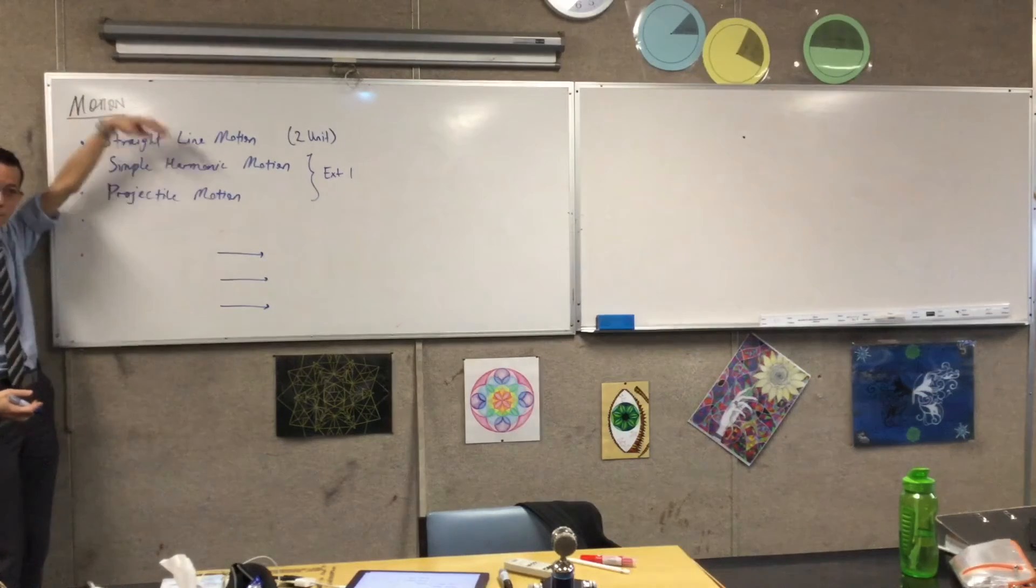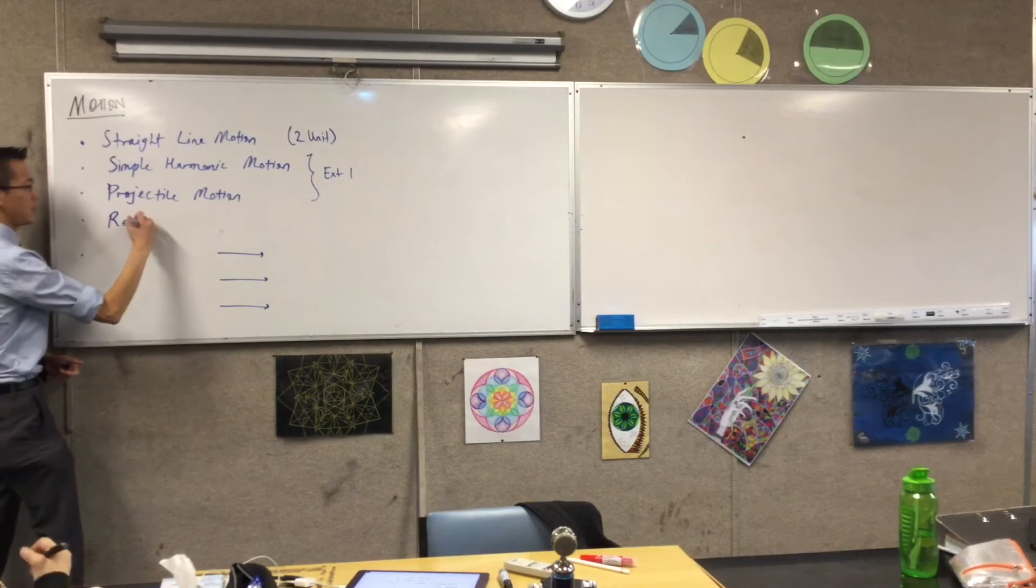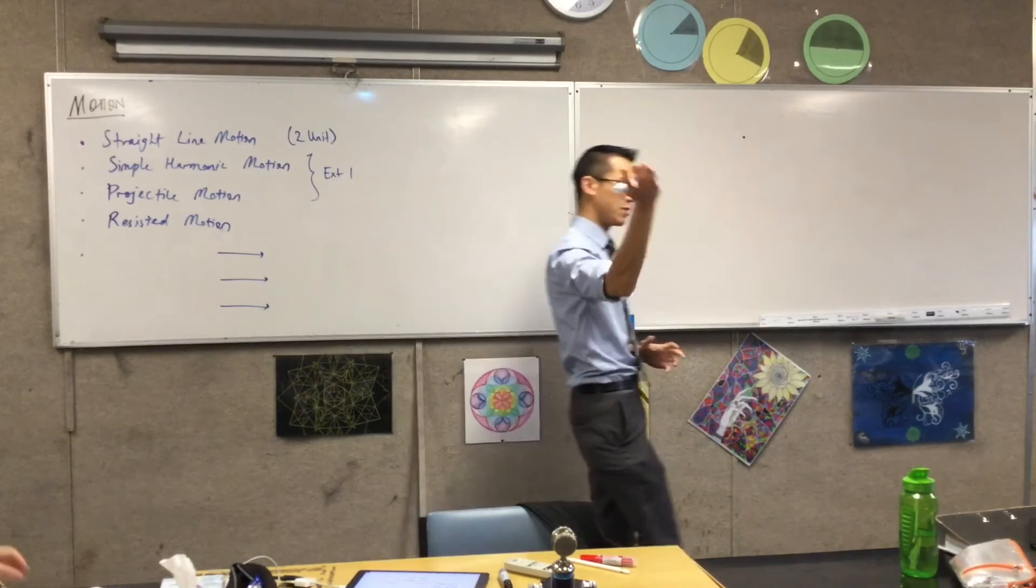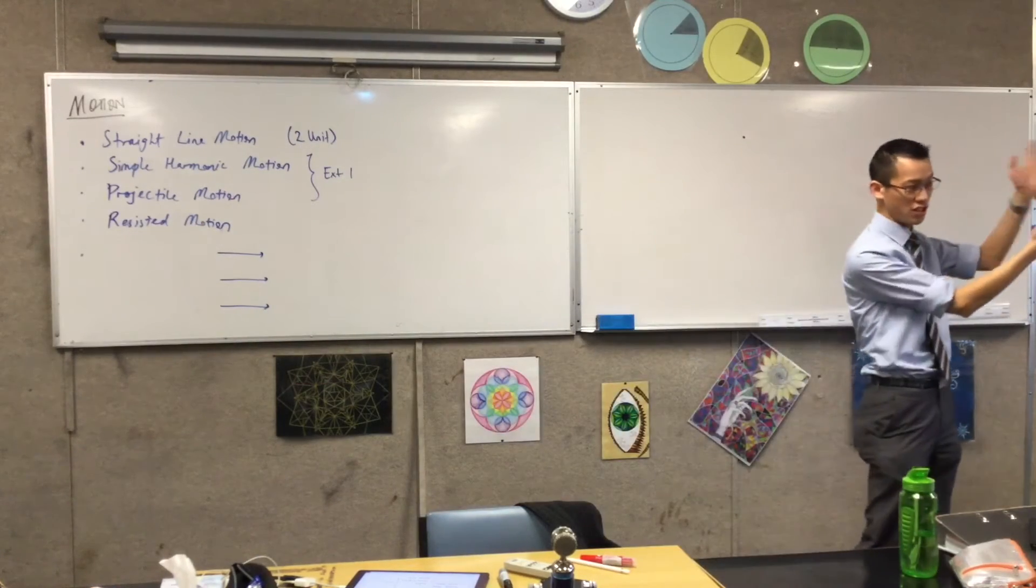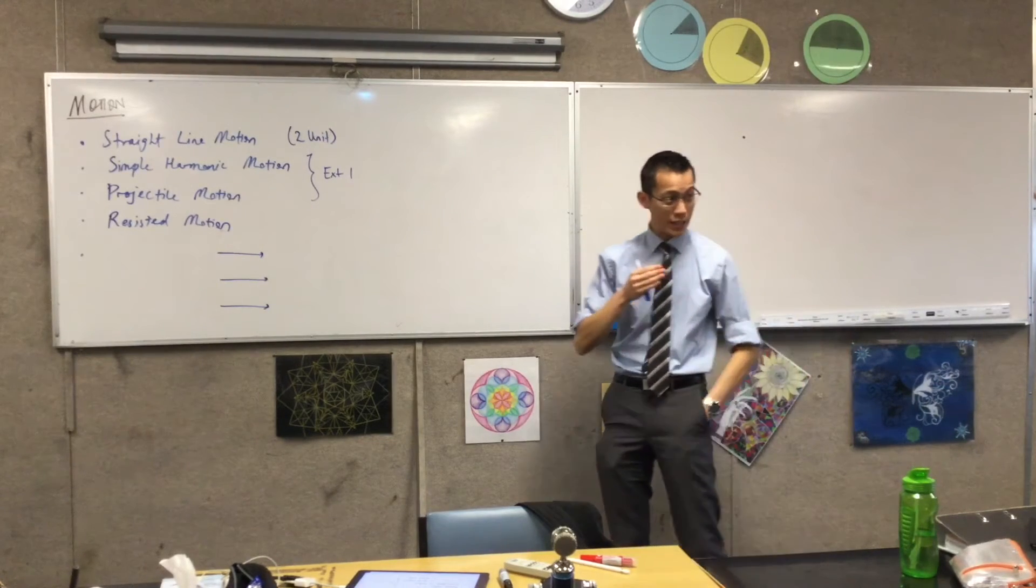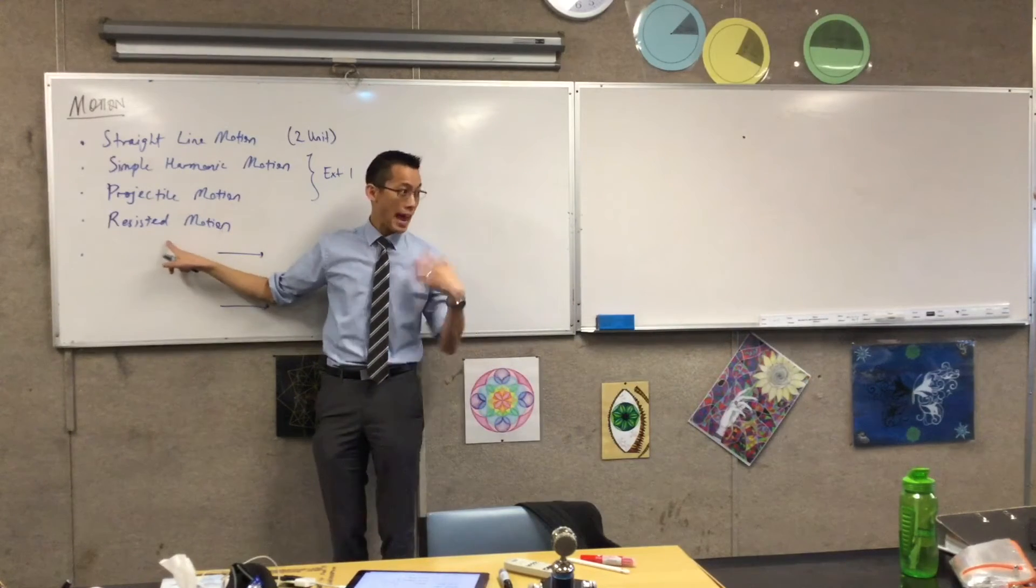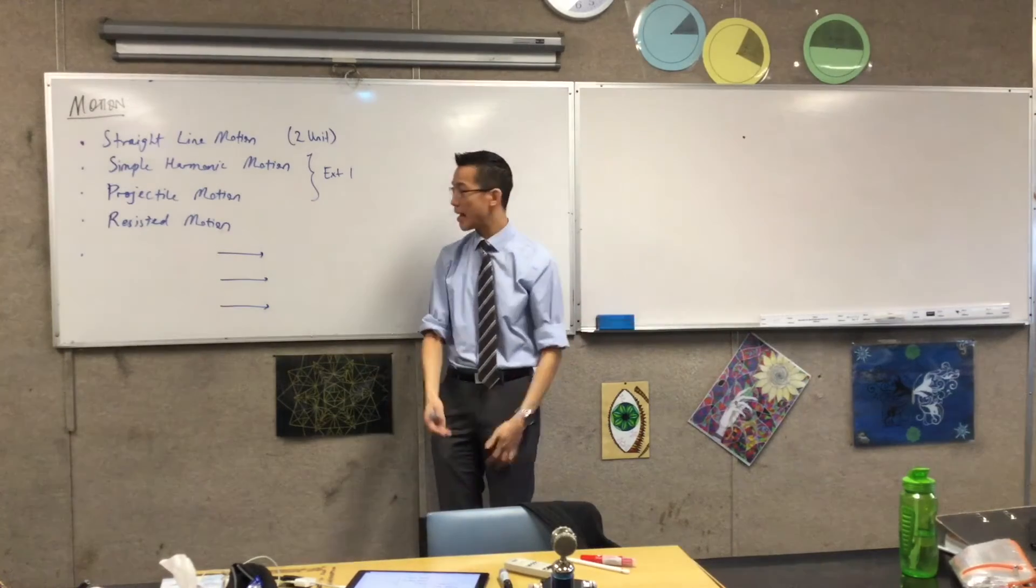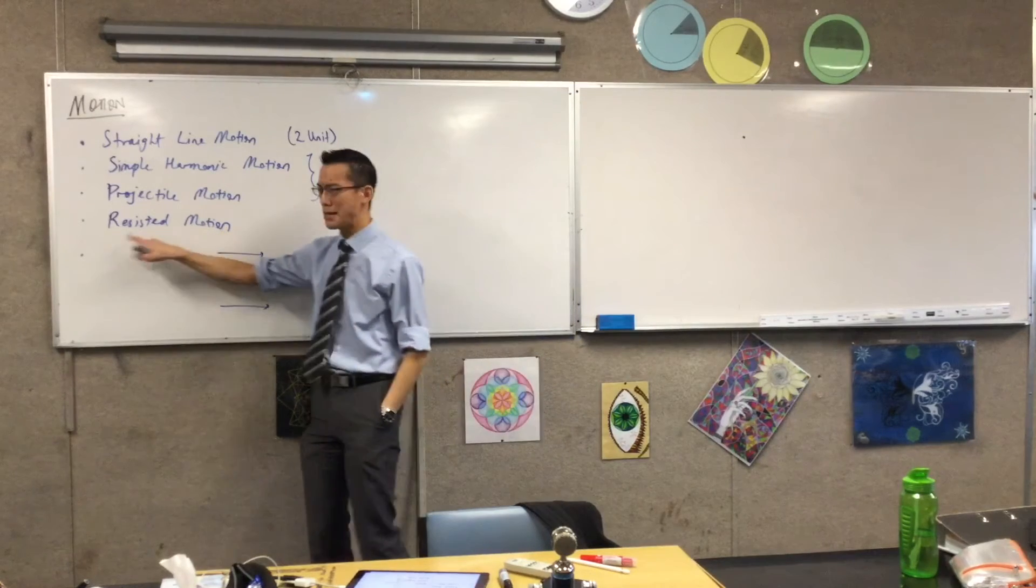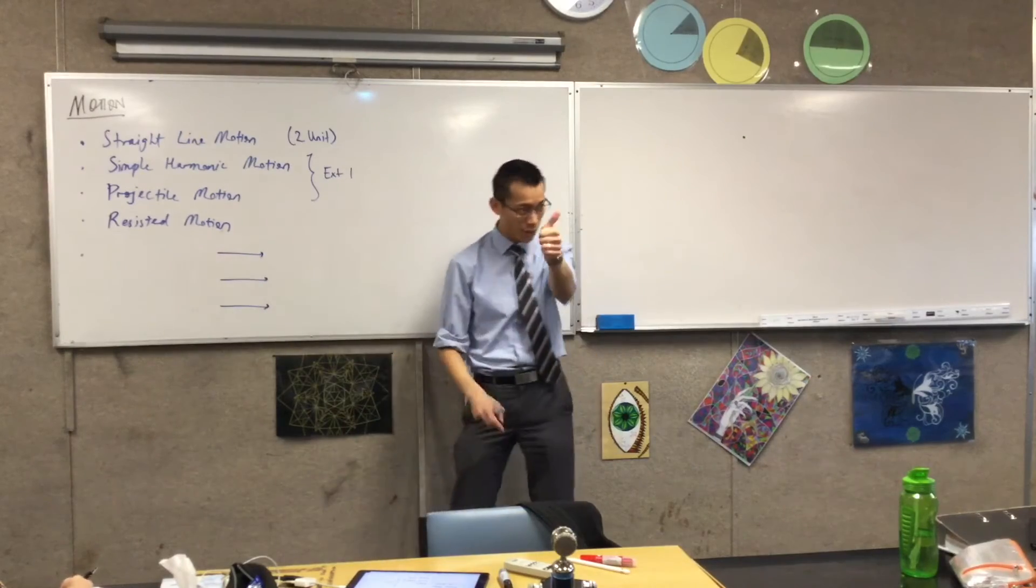When we go into mechanics, which is an extension two topic, we're just going further down into all of the details of what's going on. So the first thing is what we call resisted motion. Remember I said, an object is moving, it has such and such displacement, such and such velocity, such and such acceleration. Mechanics are trying to answer the question of, well, why is it doing that? If you've got an object and it's just slowing down forever, why is it doing that? Well, maybe it's in a medium like air or like a muddy pond or something like that, that is slowing it down constantly. So resisted motion means it's motion that's being stopped or resisted by something in the medium. That's the first thing, the extension two motion.